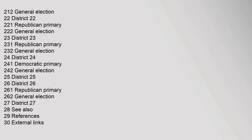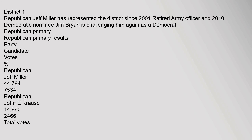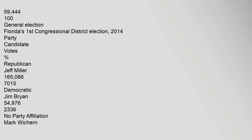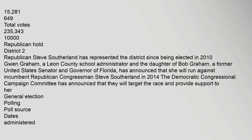District 1: Republican Jeff Miller has represented the district since 2001. Retired Army Officer and 2010 Democratic Nominee Jim Bryan is challenging him again as a Democrat. Republican Primary Results: Republican Jeff Miller 44,784 votes. Republican John E. Krause 14,662 votes. Total Votes 59,444. General Election: Republican Jeff Miller 165,086 votes (70.15%), Democratic Jim Bryan 54,976 votes (23.36%), No Party Affiliation Mark Wickern 15,281 votes. Total Votes 235,343. Republican Hold.